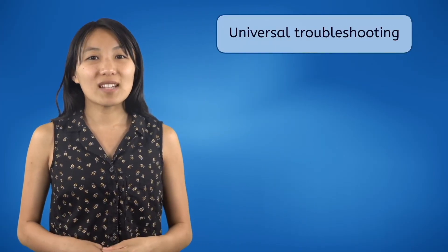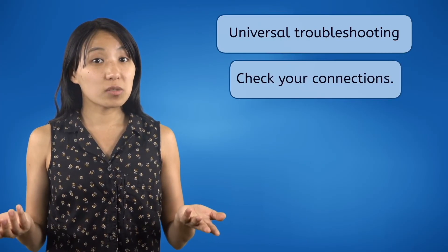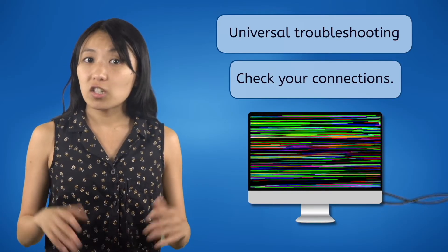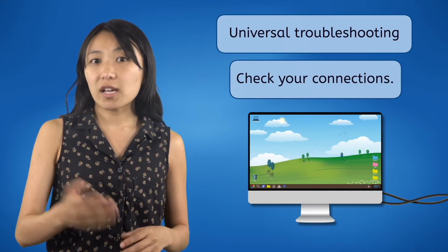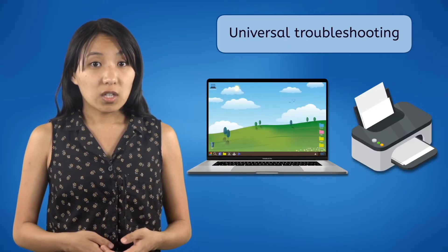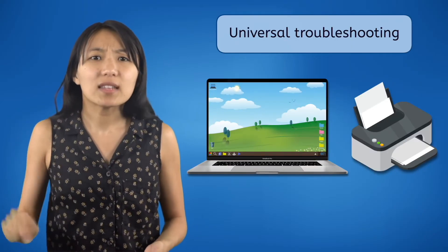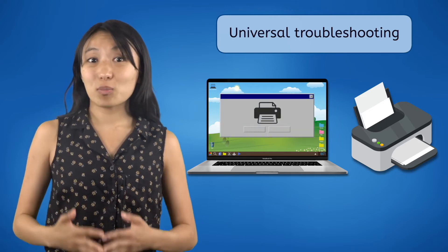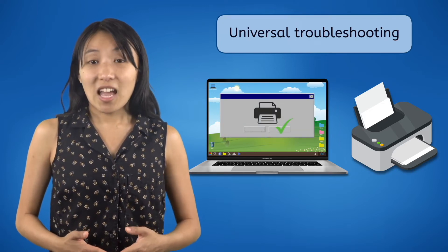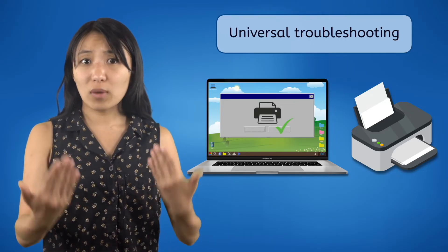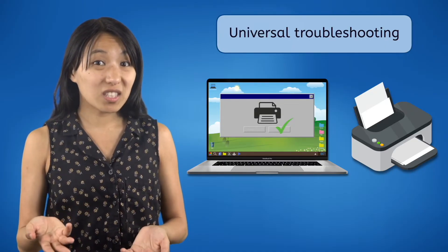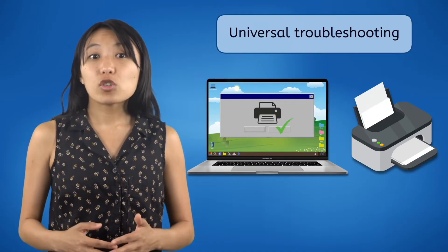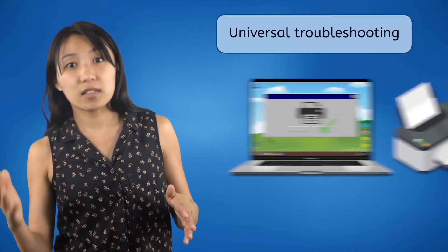The second universal troubleshooting step is to check your connections. If your screen or other device is glitching, check that the cable connecting it to the computer is connected properly. This also applies to wireless devices — they may have to be linked with the computer in order to work. If you hit print but the printer doesn't do anything, make sure the printer and computer are wirelessly connected. Remember, communication is a two-way street. If your computer isn't able to communicate with a device, the problem could be with the connection on either end, so make sure to check both the computer and the device.